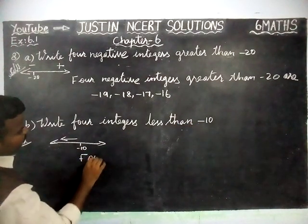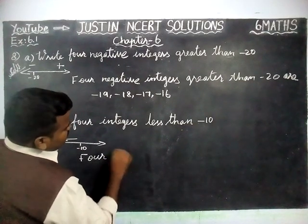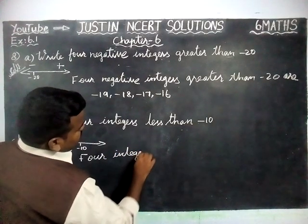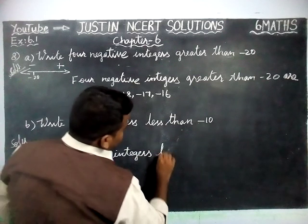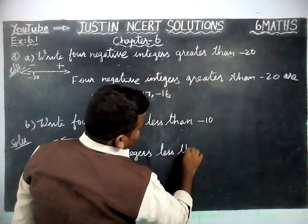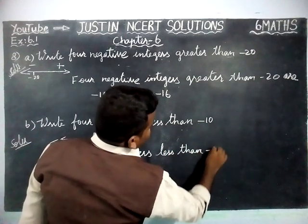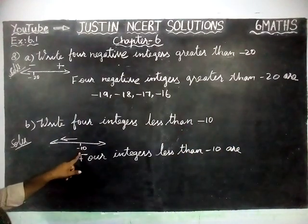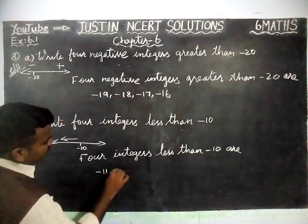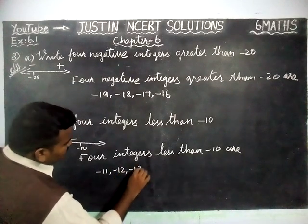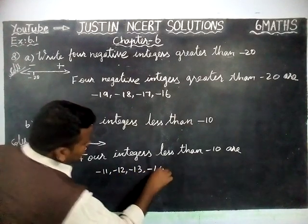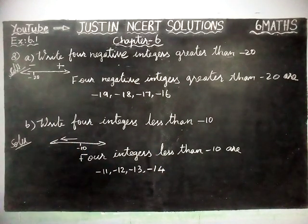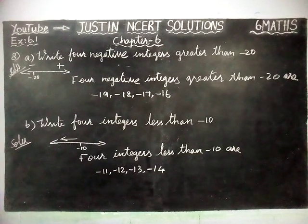4 integers less than minus 10, from minus 10, left hand side: minus 11, minus 12, minus 13, minus 14. So that's all students, kindly give your suggestions in the comments box, share this video to your friends and subscribe our channel. Thank you.